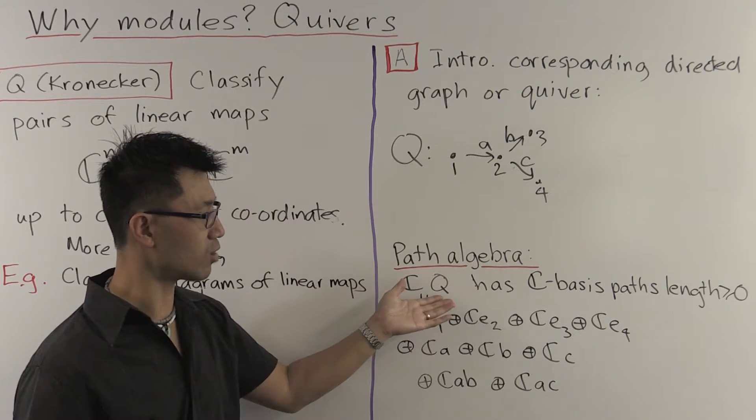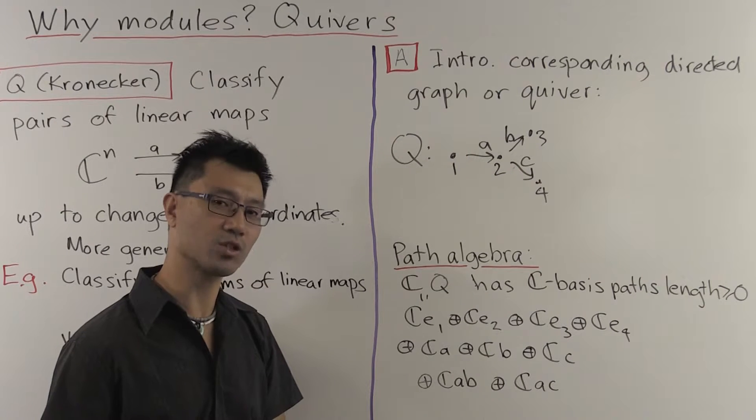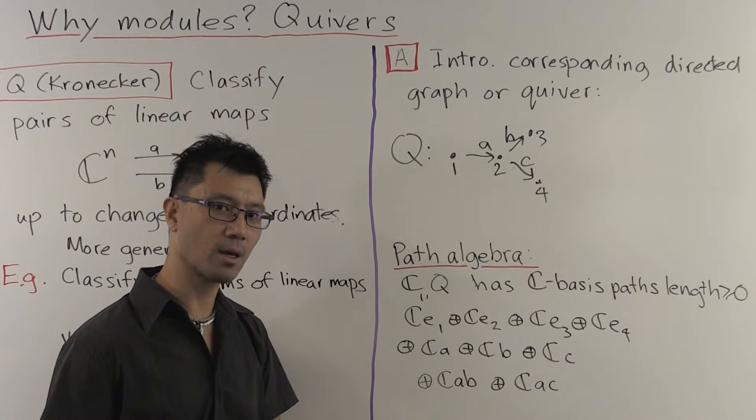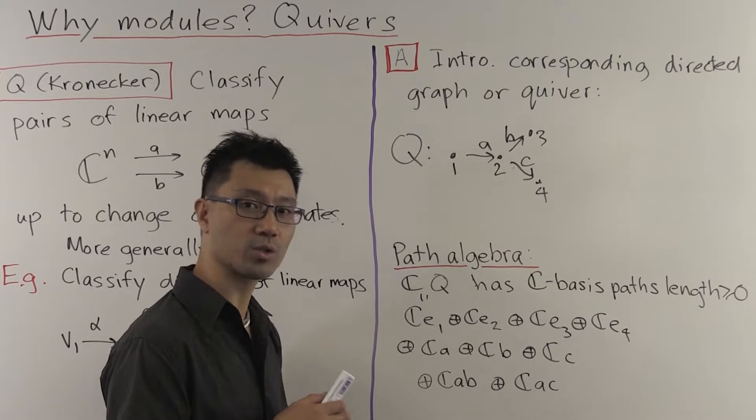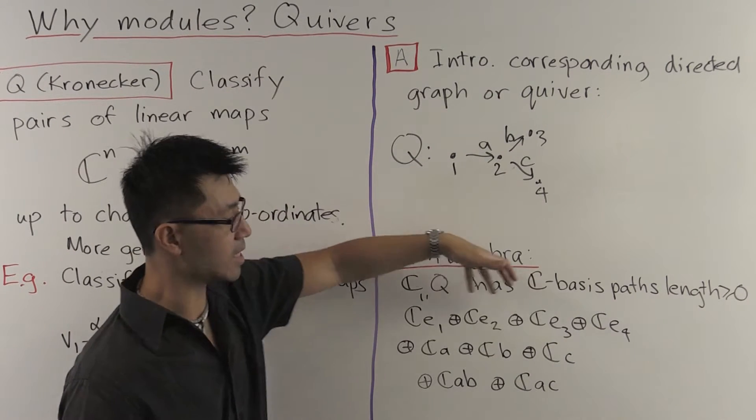So I've told you the vector space structure of this ring. And now I only need to tell you how to multiply two elements together. And to do that, I just need to tell you how to multiply basis elements.